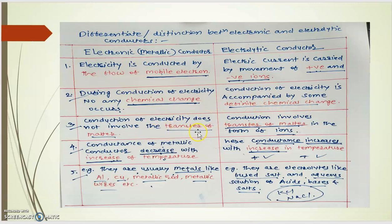Then, conduction of electricity does not involve the transfer of matter. Now there is no any kind of chemical change, so there is no question arise of the transfer of matter. Because electricity is totally depends on the free electron in case of metallic conductors, so because of which no transfer of matter. But there is a chemical change because of which there is a transfer of matter. So conduction involves transfer of matter in the form of ions.